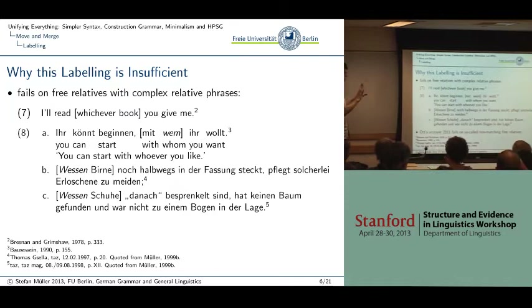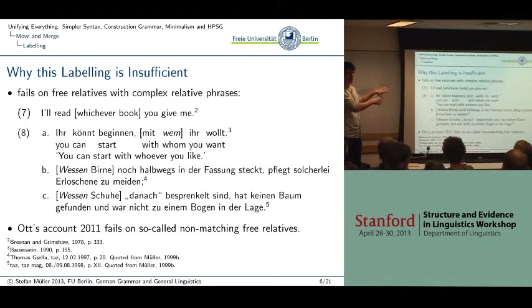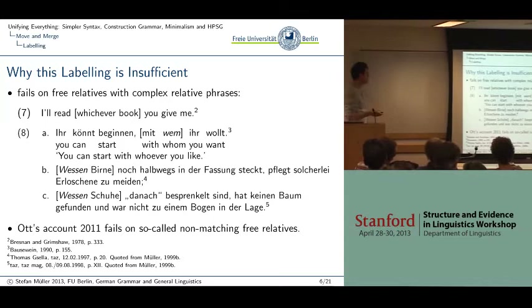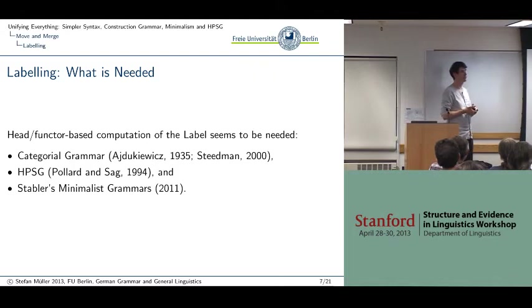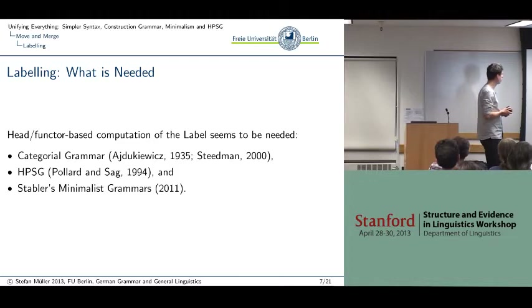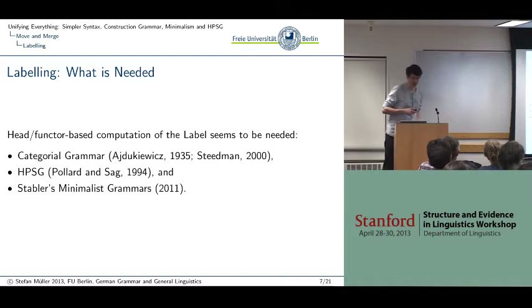There's another paper by Ott who accounts for this data in a way that is not satisfying. He notes in a footnote that his account does not work for so-called non-matching free relative clauses. This is a fundamental issue — you need labeling to work for all structures. What I suggest is that we return to an analysis of free relatives suggested in the 80s by Koss and Hahn-Wilmsteig in the GP framework, and assume a head-factor-based computation of labels as done in categorical grammar, HPSG, or Stabler's minimalist grammars.